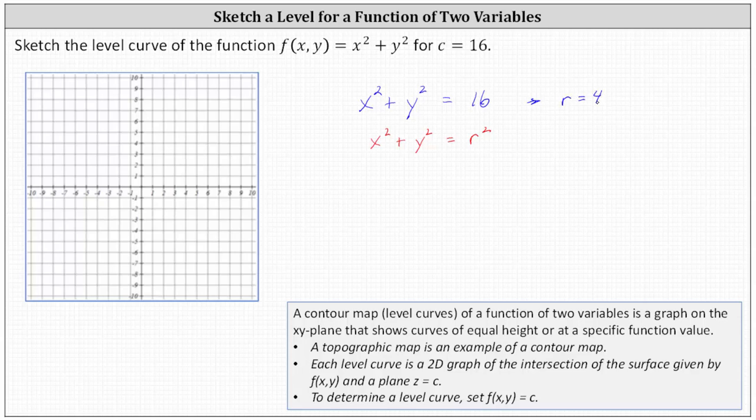So again if the center is at the origin we want the set of points four units from the origin. Let's plot the points (4, 0), (-4, 0), (0, 4) as well as (0, -4). Notice these points are four units from the origin and now we'll sketch a circle passing through these four points.